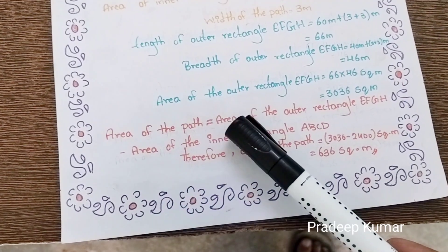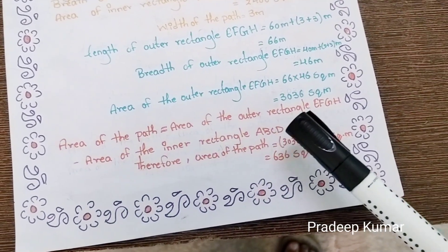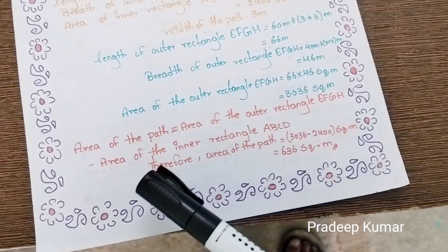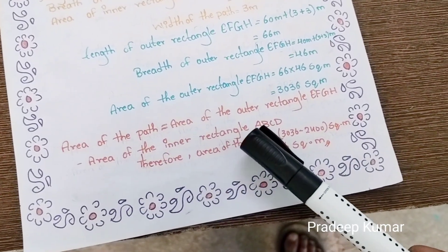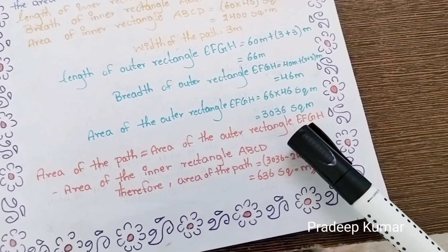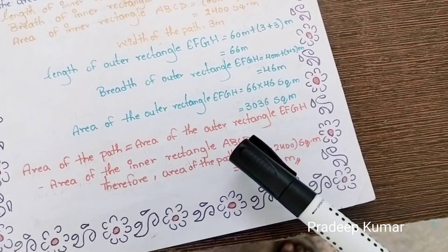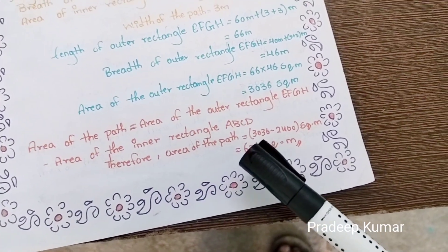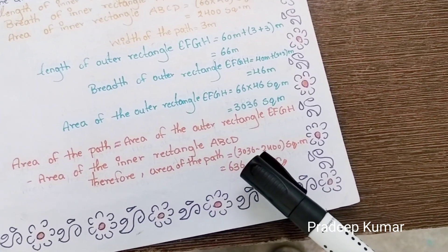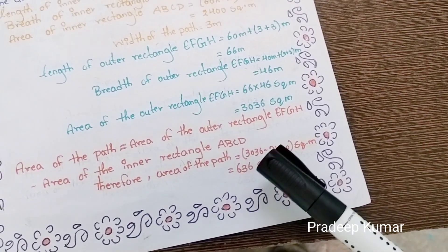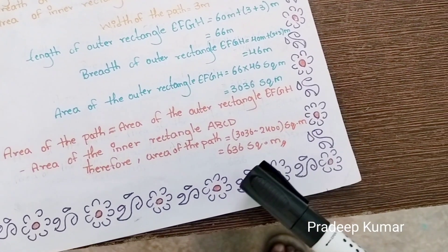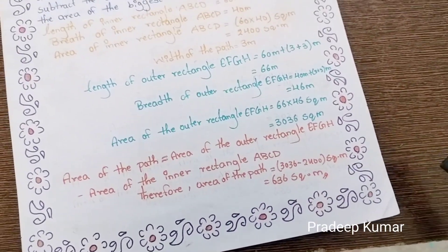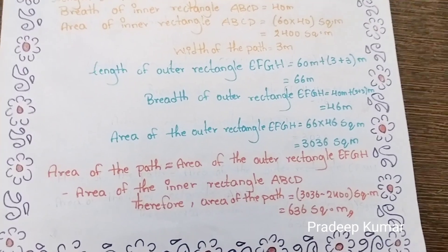Area of the path is equal to area of outer rectangle minus area of inner rectangle. Outer rectangle is EFGH and inner rectangle is ABCD. Therefore, area of the path is equal to 3036 minus 2400, that is equal to 636 square meters is the area of the path.